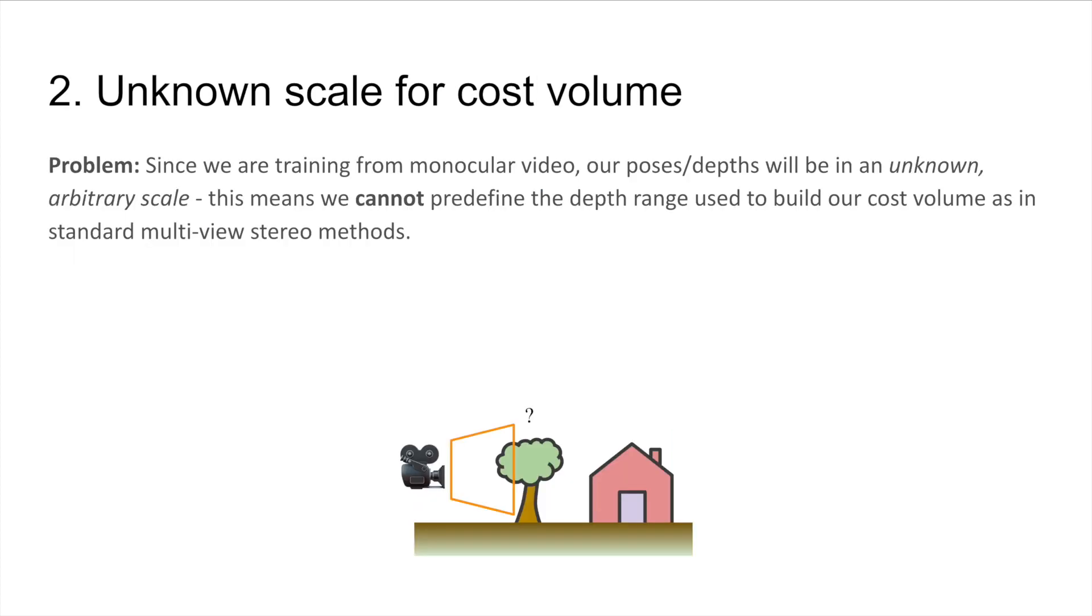Next, we will look at the scale problem. Since we are training from monocular video, our poses and depths will be in an unknown, arbitrary scale. This means we cannot pre-define the depth range used to build our cost volume, as in standard multi-view stereo methods.